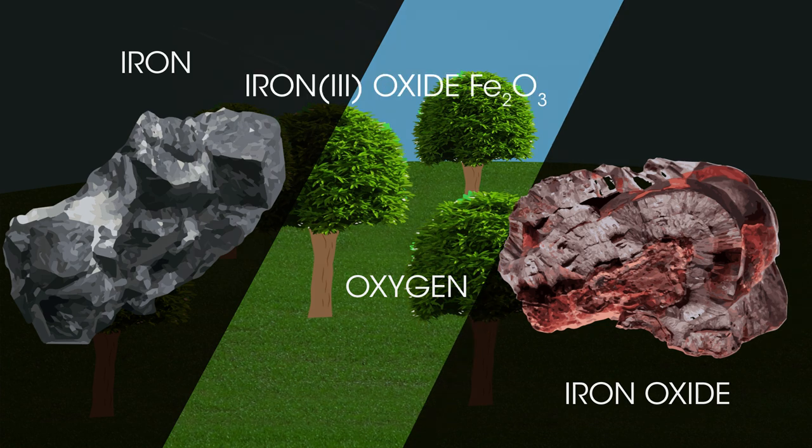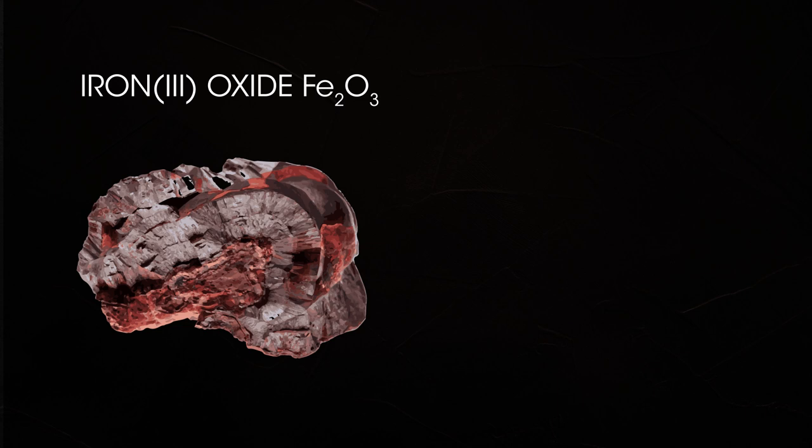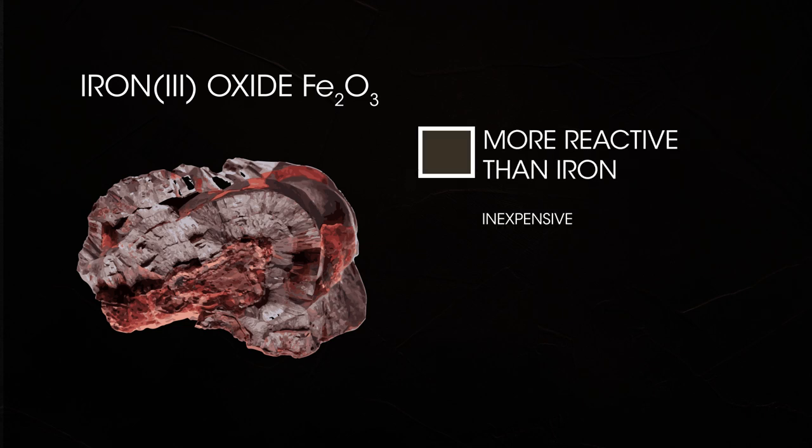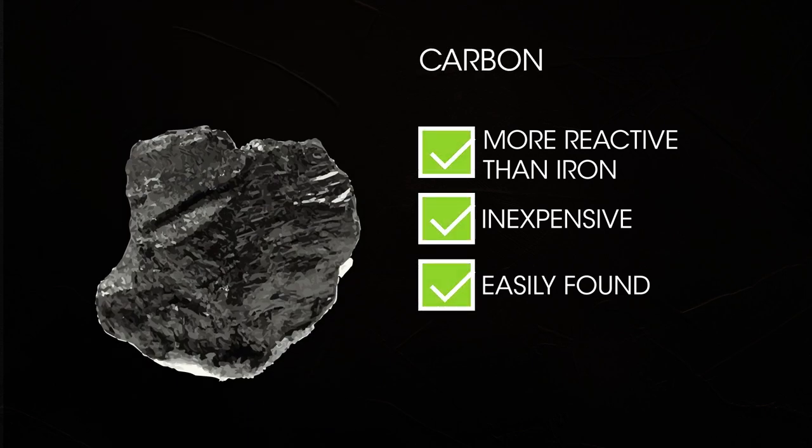Iron is found as the compound iron oxide in the ore known as hematite. To displace iron from its oxide we need a material that is more reactive than iron, inexpensive and easily obtainable. Carbon ticks all of those boxes.